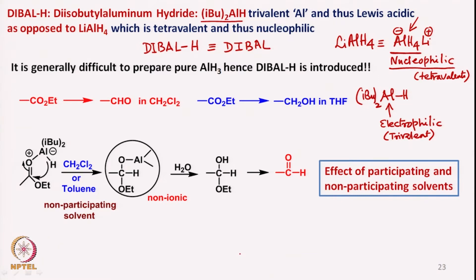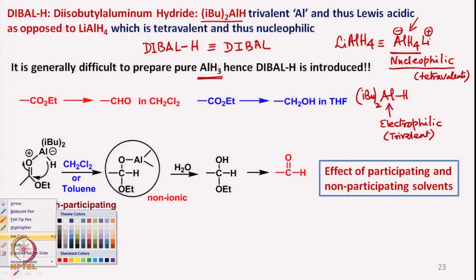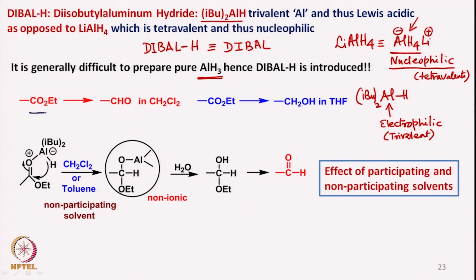Before DIBAL was introduced, people had tried to look at the reactivity of aluminum hydride, but aluminum hydride is not easy to handle. Therefore they tried diisobutyl aluminum hydride, which is relatively easier to handle. Both aluminum hydride and diisobutyl aluminum hydride are trivalent in nature and therefore electrophilic towards their reaction with an ester or carbonyl group.